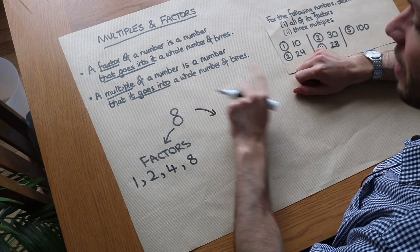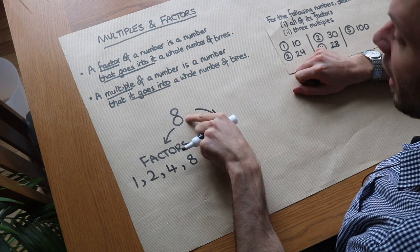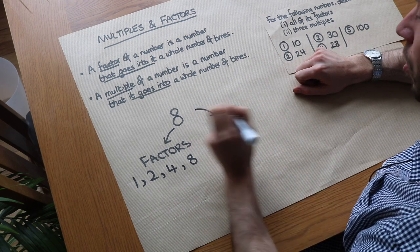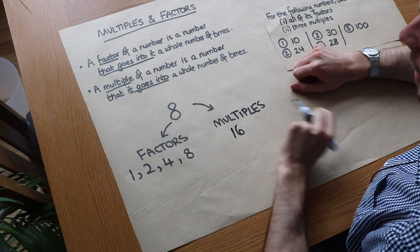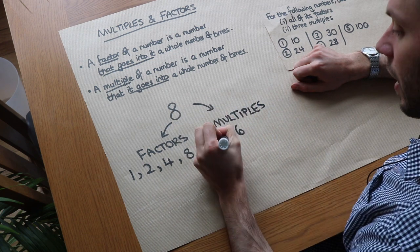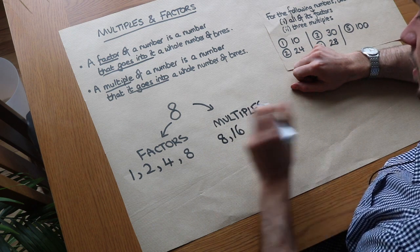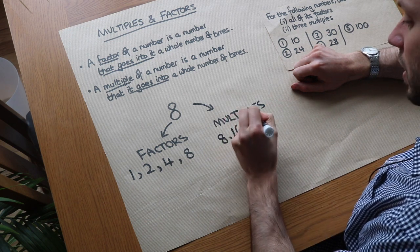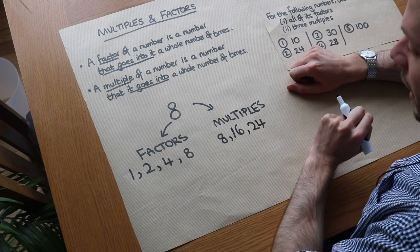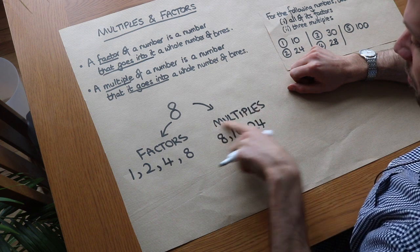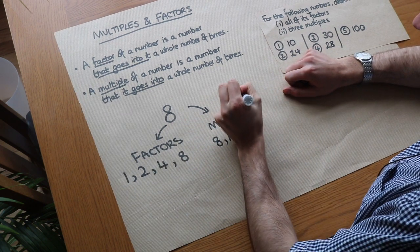A multiple, meanwhile, is a number that 8 goes into a whole number of times. So 8 goes into what numbers? Well, 8 goes into 16 — we can divide 16 by 8 to get a whole number. 8 itself is a multiple of 8 because 8 divided by 8 is 1. It could also be 24: 24 divided by 8 is 3. Effectively, multiples of 8 are going to be the 8 times table.